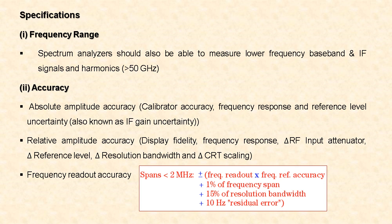Now let us see some important specifications of a spectrum analyzer. First, frequency range: spectrum analyzers should be able to measure frequencies for lower frequency baseband and intermediate frequency signals, and also harmonics greater than 50 GHz. Next, accuracy: absolute amplitude accuracy is due to calibrated accuracy, frequency response, and reference level uncertainty (also known as IF gain uncertainty). Relative amplitude accuracy may be due to display fidelity, which includes log amplifier fidelity, detector linearity, and digitizing circuit linearity.